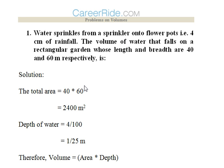So the total area can be calculated just because length and breadth are given 40 and 60. So 40 into 60 goes up to 2400 m². We got the area of the rectangular garden.